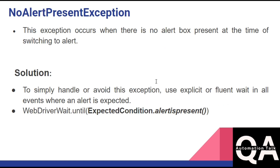The next exception is NoAlertPresentException. As the name suggests, this exception occurs when there is no alert or text box present at the time of switching to alert. This happens many times during execution when the test script is too fast — when you click on any button and you are expecting an alert, but due to the slowness of the application or because the script is too fast, the alert is still not opened, and the Selenium method is trying to locate the alert which has not opened yet. At that time it is going to throw an exception that the alert you are looking for is not present.